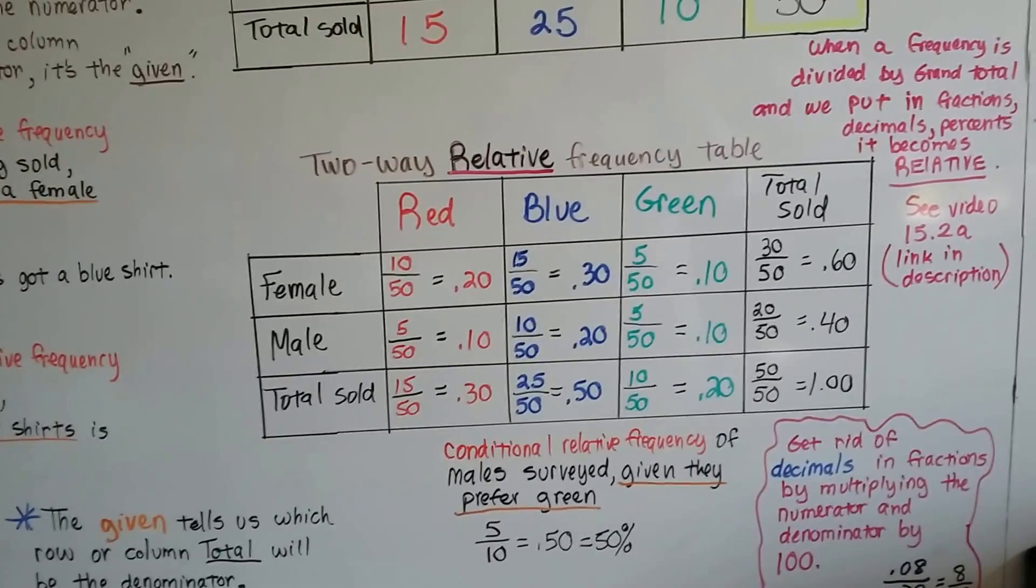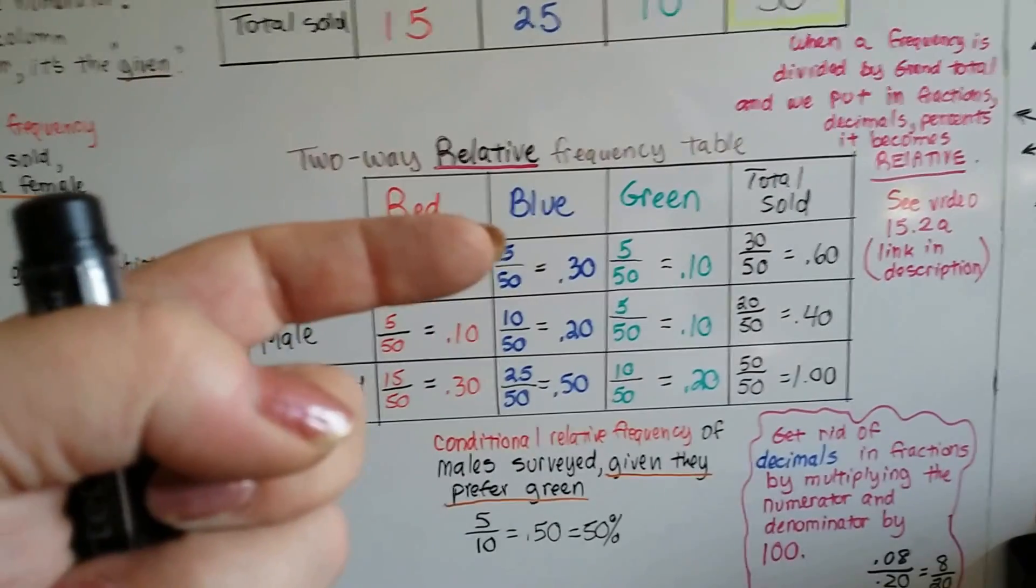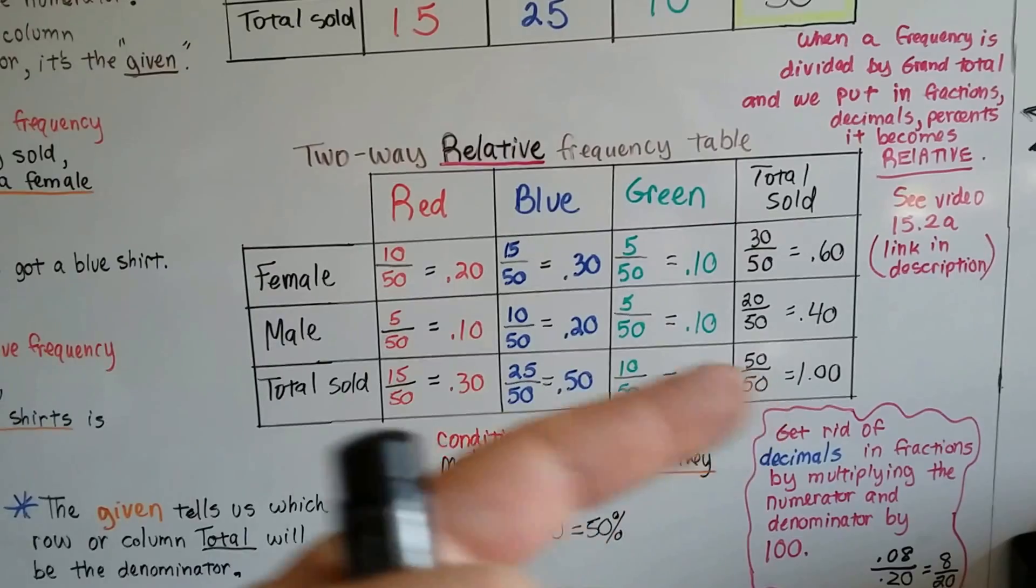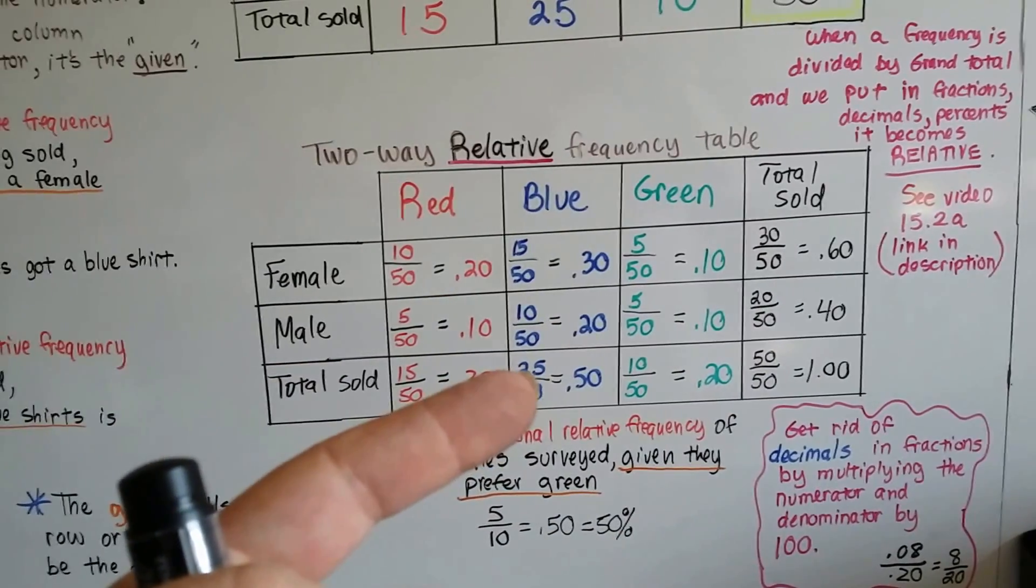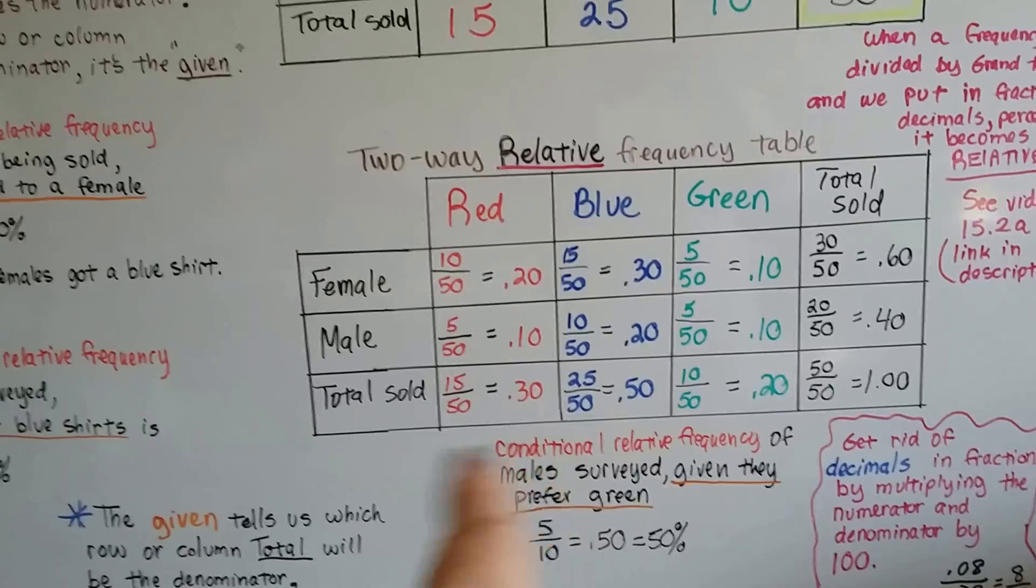So even if it's a two-way relative frequency table, we can still pull the information out because the numerator tells us there's 15 blue females, and just ignore that grand total out of a total of 25. We pull the information out of those numerators and ignore the other information.